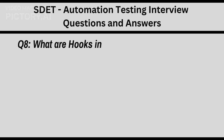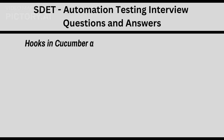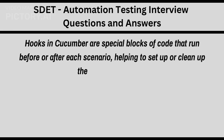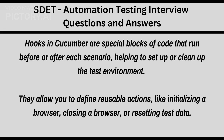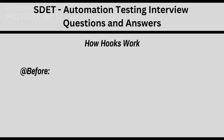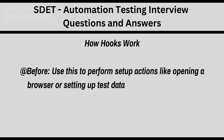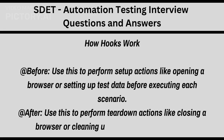Q8. What are hooks in Cucumber, and how do you use them? Hooks in Cucumber are special blocks of code that run before or after each scenario, helping to set up or clean up the test environment. They allow you to define reusable actions like initializing a browser, closing a browser, or resetting test data. Before: use this to perform setup actions like opening a browser or setting up test data before each scenario. After: use this to perform teardown actions like closing a browser or cleaning up data after each scenario.